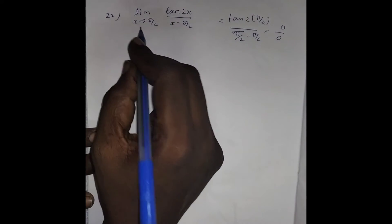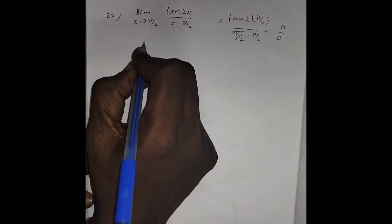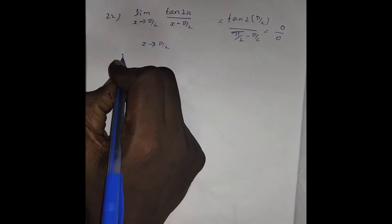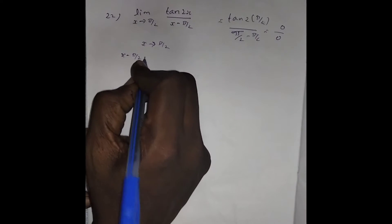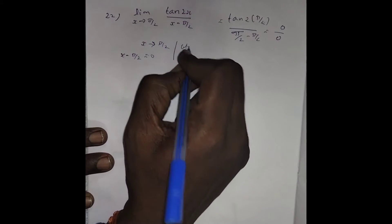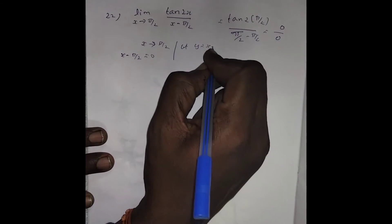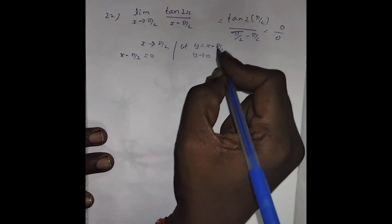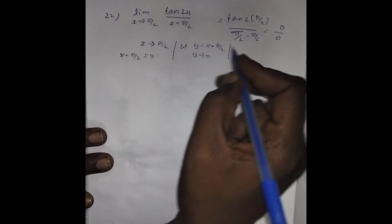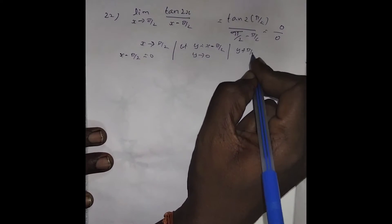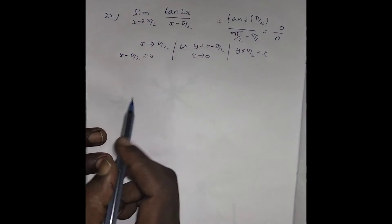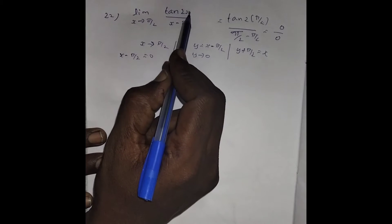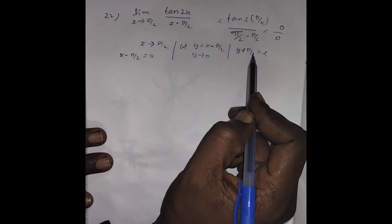So we are going to do some modification in the limit. We know x tends to π/2, which means x - π/2 tends to 0. So let y = x - π/2, then y tends to 0. Bringing -π/2 to the other side gives x = y + π/2.